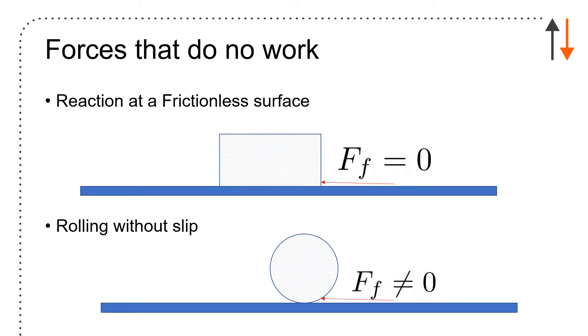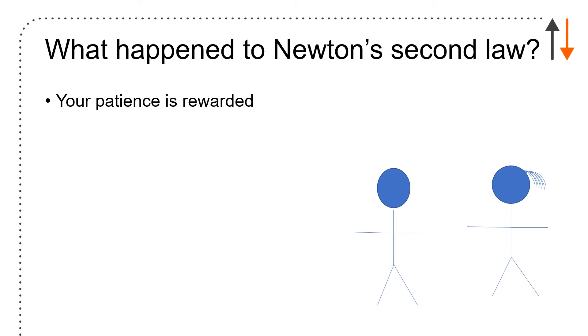There are forces that do no work. For example, reaction at a frictionless surface. If I push this block and it's frictionless, there's no force of friction. The force of friction is equal to zero. And therefore, the work done is equal to zero. The trickier one is rolling without slip. Force of friction does not equal zero. However, this ball or this point has zero velocity. So it doesn't displace. And because of that, and we'll talk more about this relatively soon, this will be chapter 5 in Merriam and Craig, chapter 16 or 17 in Hibbler.